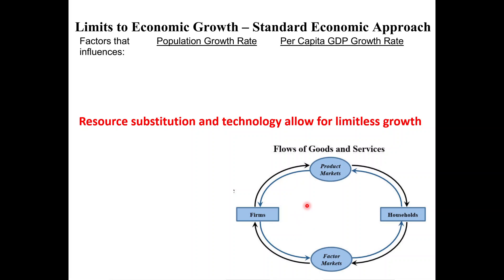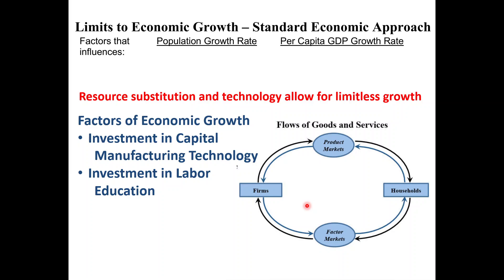This is the argument for traditional economists, and seeing data like that, they have a good argument: growth is unlimited. The focus, remember the circular flow diagram, is really on the factor market — investment in capital, manufacturing technology, investment in labor, education. Between capital and labor — remember the three categories: land, labor, capital — through this market system, technological innovation will substitute and replace resources, and growth will continue to be unlimited.